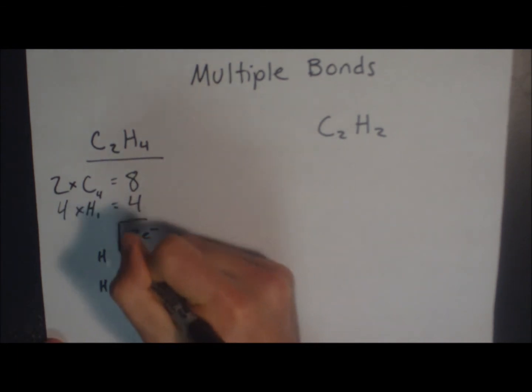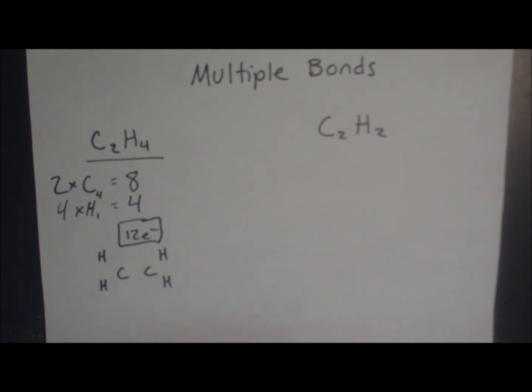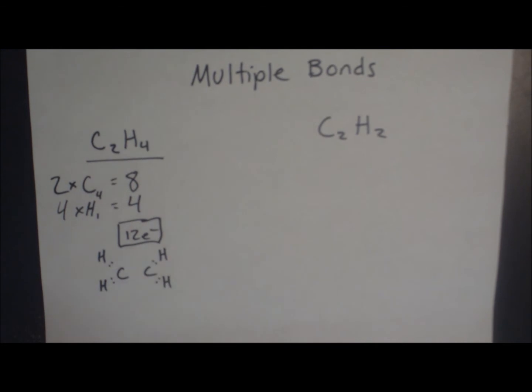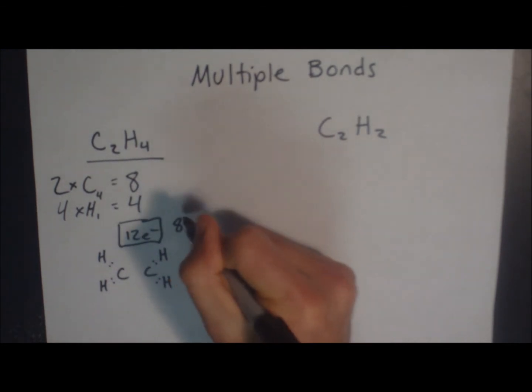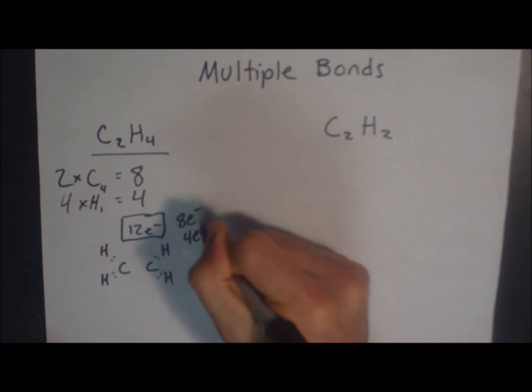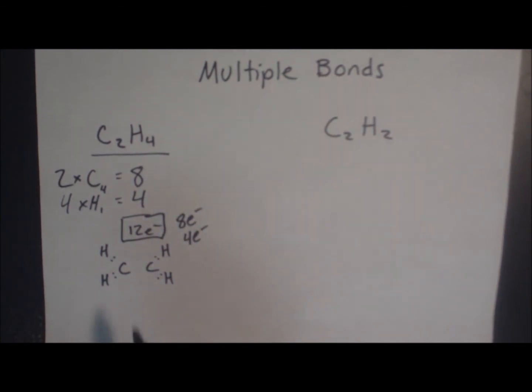And now we plug in these 12 electrons into our diagram. Hydrogens have 2, so I like to start there. And we've used 8 electrons total. Now we have 4 left.